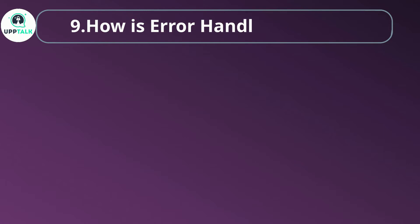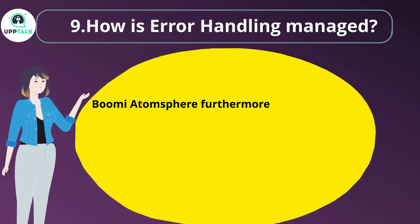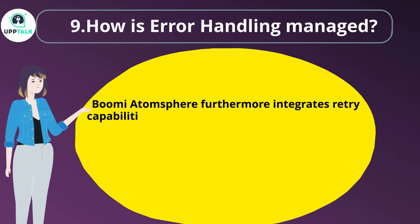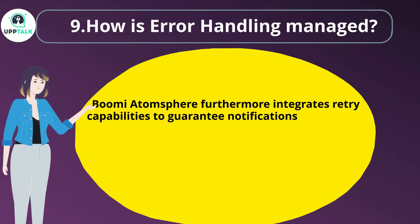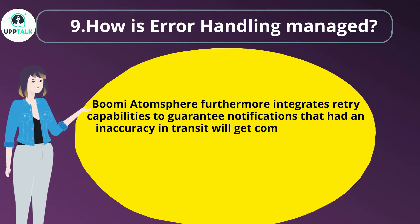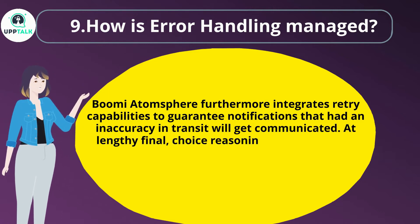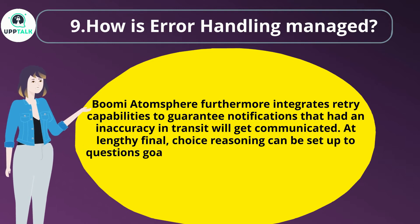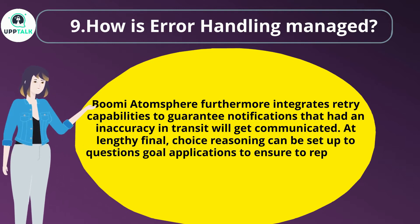Question 9: How is error handling managed? Boomi Atmosphere integrates retry capabilities to guarantee notifications that had an inaccuracy in transit will get communicated. Additionally, conditional logic can be set up to query goal applications to ensure duplicate information isn't sent out to the app.